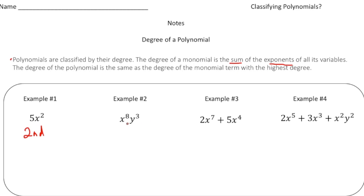But over here notice we have x to the eighth, y to the third power. So now because we have two different variables, we have to get the sum of the two. So 8 plus 3 would be 11. So the degree of this monomial would be the 11th degree.